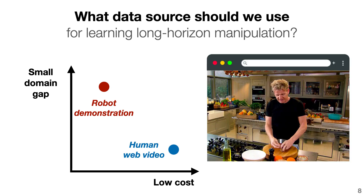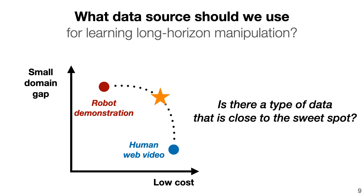We could also use human video from the internet, which is cheap, but there is a significant domain gap, especially considering most of these videos are 2D data while robots rely heavily on 3D information. So, is there a type of data that is more close to the sweet spot of this plot?